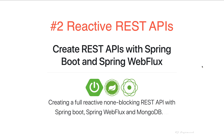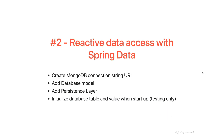Spring Data is a database access framework that supports a number of Reactive Data Access options, including Reactive Cassandra, Reactive MongoDB, Reactive Couchbase, and Reactive Redis. In this tutorial, I will use MongoDB — make sure you have it installed on your local machine.